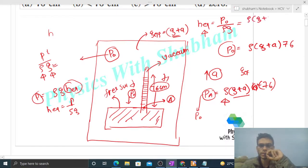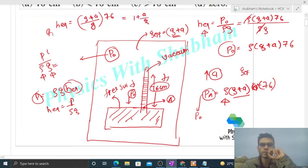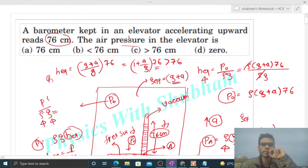When we divide, we get rho(g plus a) into 76 divided by rho into g. The rho cancels. h equivalent equals (g plus a) divided by g into 76, which is (1 plus a/g) into 76, which is greater than 76.